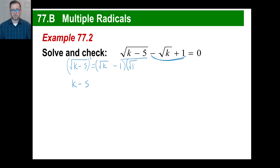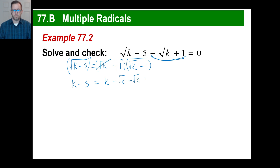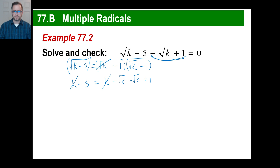When we square the right side, we have the square root of k minus 1 multiplied by itself. So square root of k times square root of k is just k. Square root of k times negative 1 is negative square root of k, and another negative 1 times square root of k is another negative square root of k. Plus 1. So a negative minus a negative gives us negative 2 square root of k on the right, which becomes positive 2 square root of k when moved over.